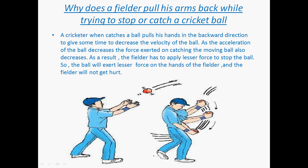As you know the formula, force equals MV minus MU upon T. By lowering his hand from one position to another, he is increasing the time. When the time is increased, the momentum change is reduced and the force applied will be less. A cricketer, when catching the ball, pulls his hand in the backward direction to give some time to decrease the velocity of the ball. As the acceleration of the ball decreases, the force exerted on the moving ball also decreases, so the fielder has to apply lesser force to stop the ball.